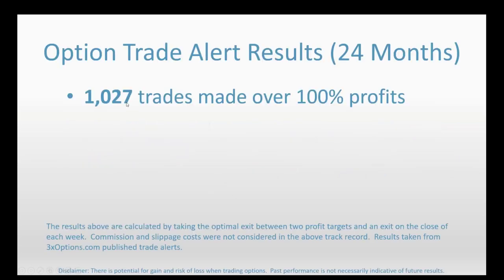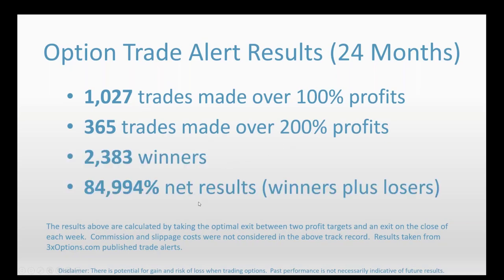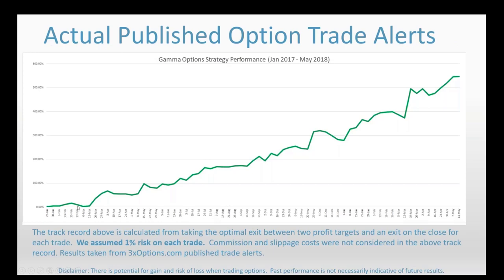This story started back in 2017. We launched a new options trade alert program designed to beat the markets through probabilities using a number of different strategies. Each week we would broadcast about 50 to 70 option trade picks, which is way too many for most retail traders. After the first 24 months, we had 1,027 trades that made over 100%, 365 trades that made over 200%, a total of 2,383 winners, and adding up all winners and losers, we were up 84,994%. In calculating these numbers, we had multiple exits — two profit targets and one end-of-trade exit — and we used what's called optimal exit to track results consistently.